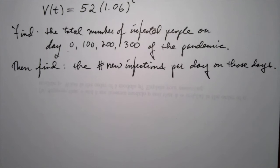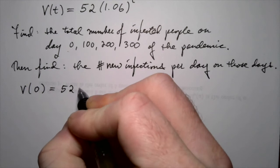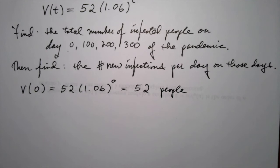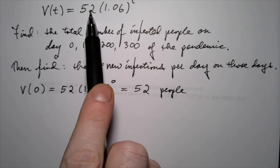To find totals, we plug these t values into the function. Plugging in t = 0: 1.06 to the 0th power times 52 equals just 52 people. That's a general fact about exponential functions — the value at t = 0 is just the constant out front.